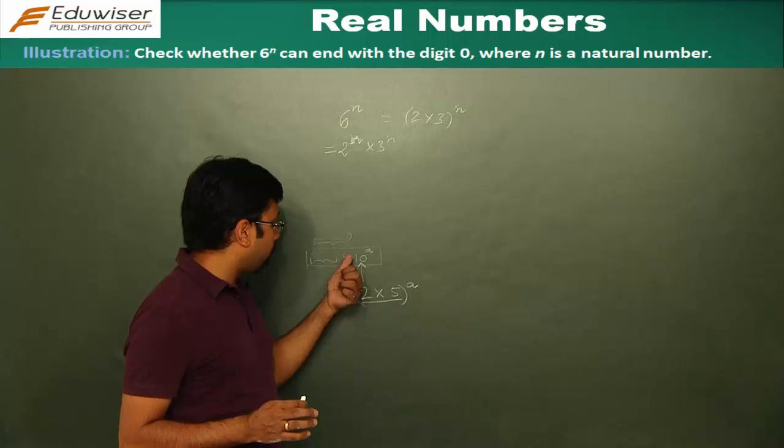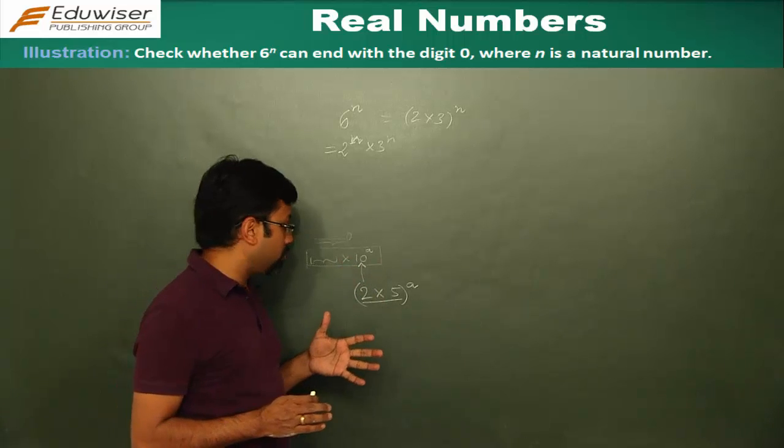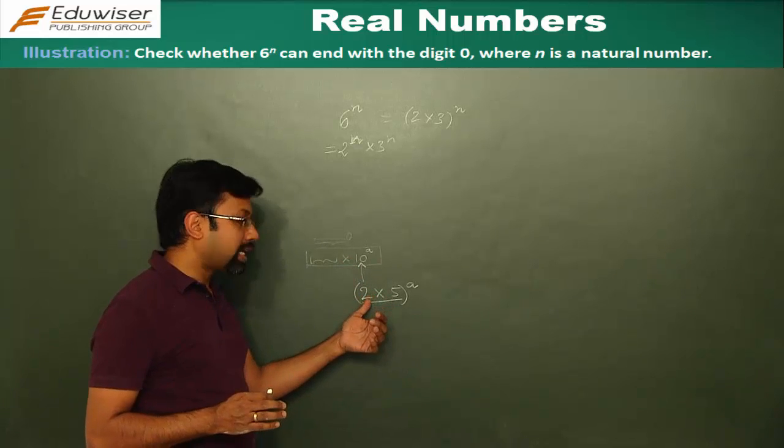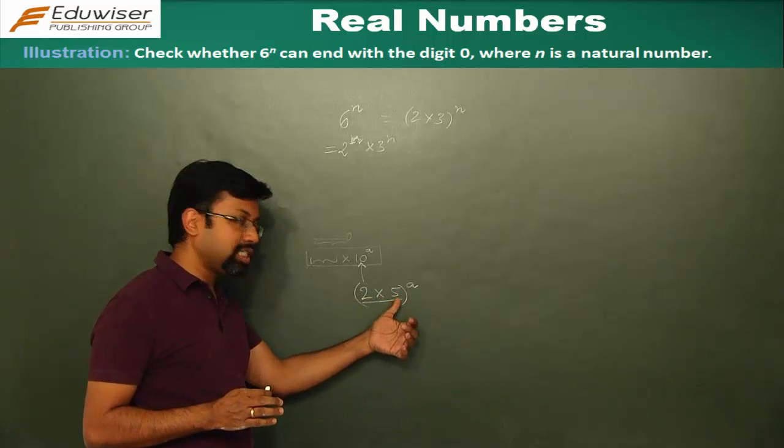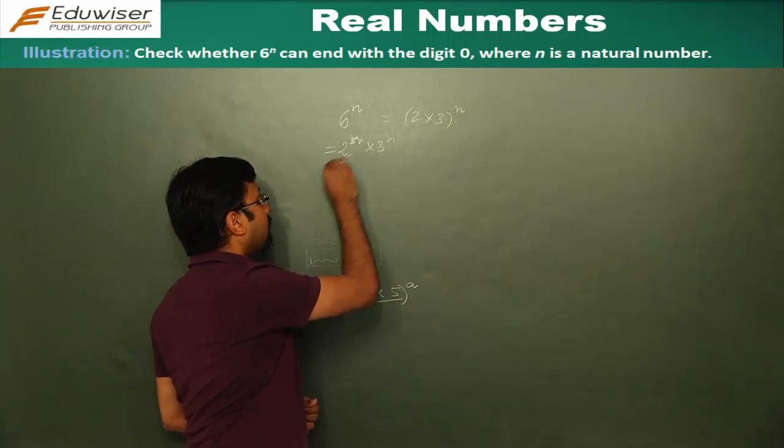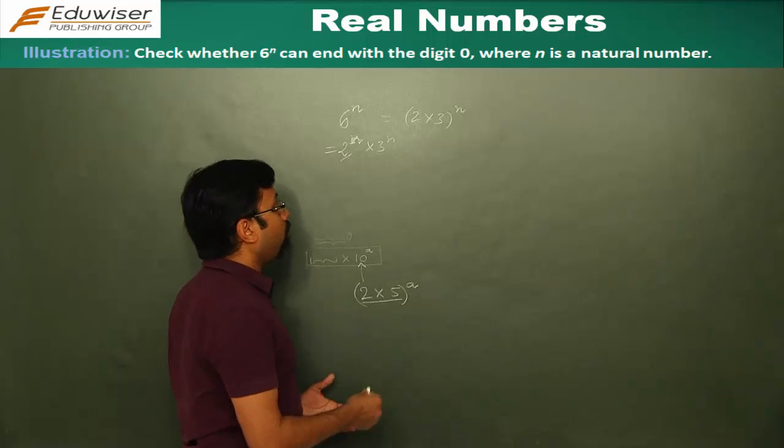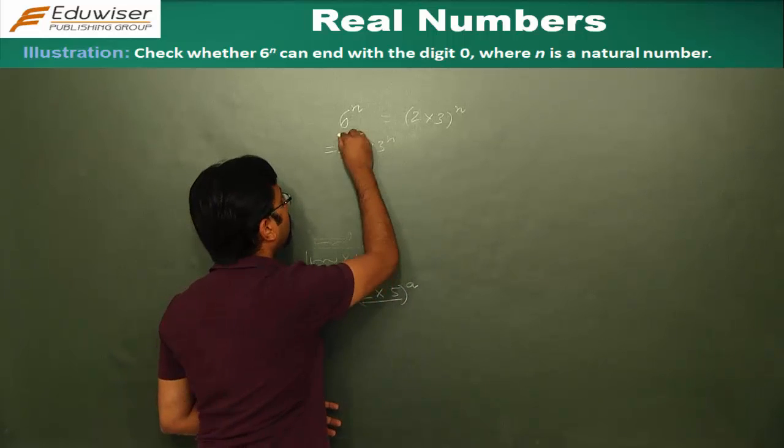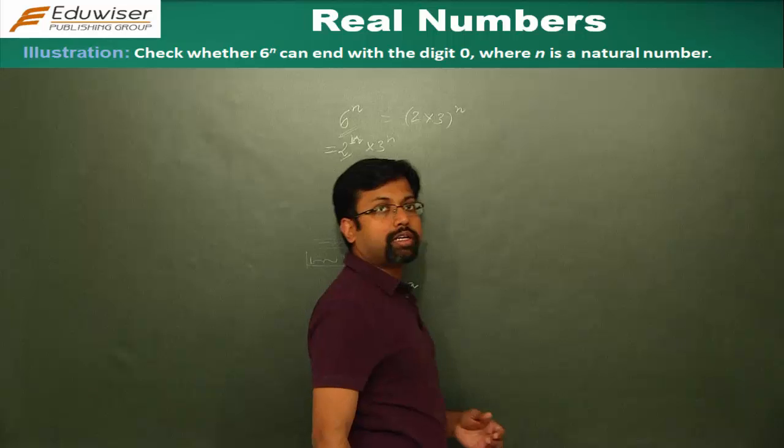And I said that for any number to end in the number 0, it has to have at least 1, 2 and at least 1, 5. There is at least 1, 2 but there is no 5. Hence, this number is not going to end in a 0.